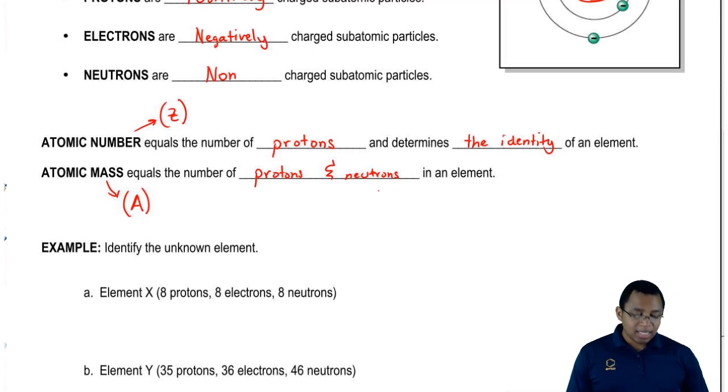If we bring this all together, we usually use the variable X to represent our element. Then we have the atomic mass as A, and right below it is our atomic number Z. You usually see this kind of notation in class and on your exams.